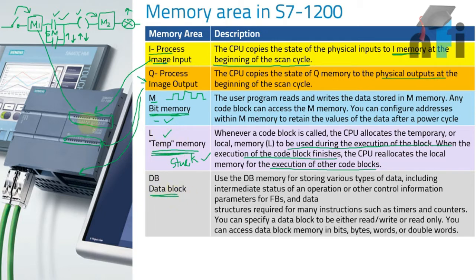Then you have data blocks. Suppose my input is connected to a sensor that reads the number of blocks, boxes, or bottles. I want to store that information in my PLC — I will use data blocks. Data blocks can generally be displayed on your HMI or touchscreen. For example, you can count how many bottles are coming, how many boxes are going — that information is stored in special memory known as a data block.